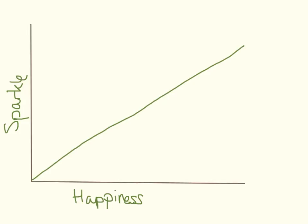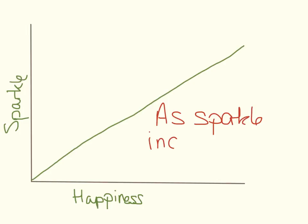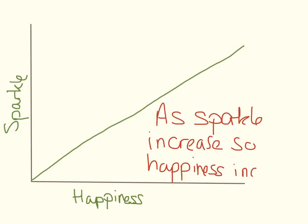To start off simply, I have a graph which correlates how sparkly something is with how happy it makes me — sparkle versus happiness. We can see this line here, and we can write a sentence that says something like: as sparkle increases, so happiness increases. This shows the examiner that we can read the axes and see what the line is doing.